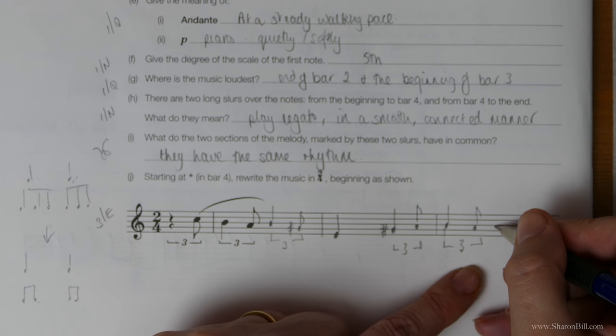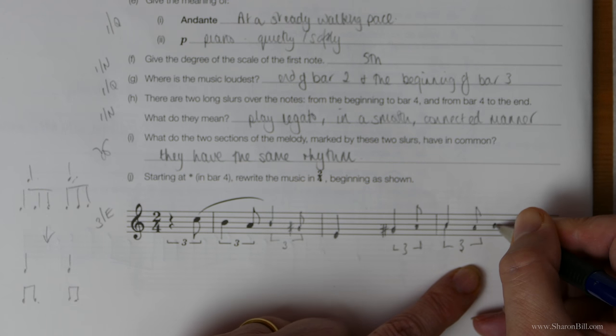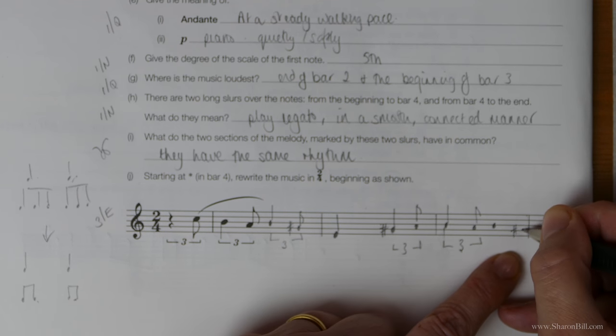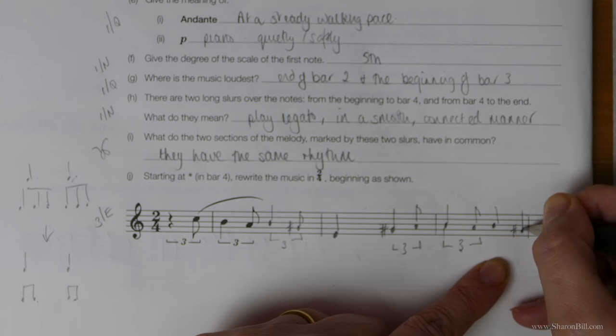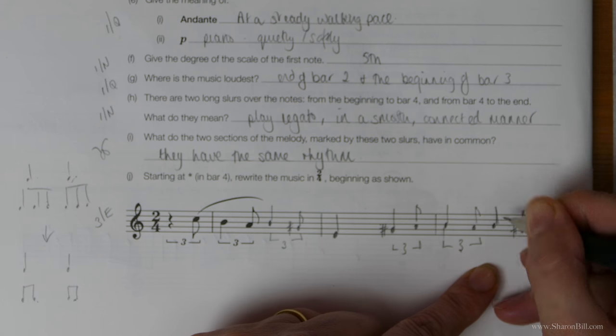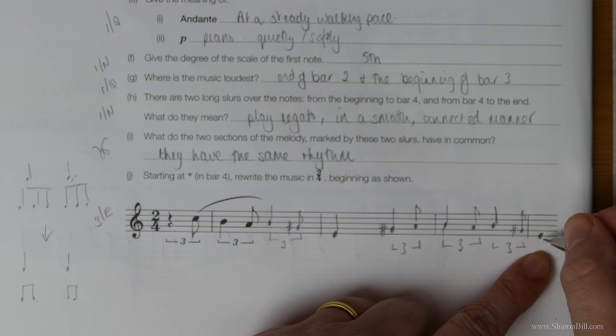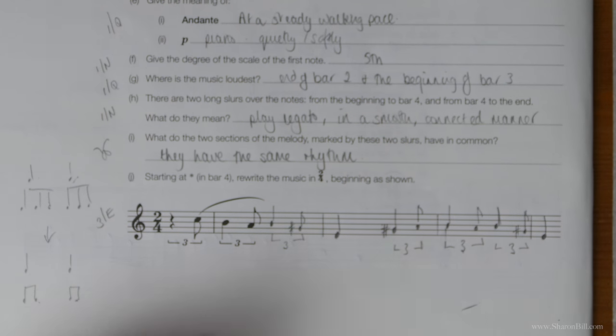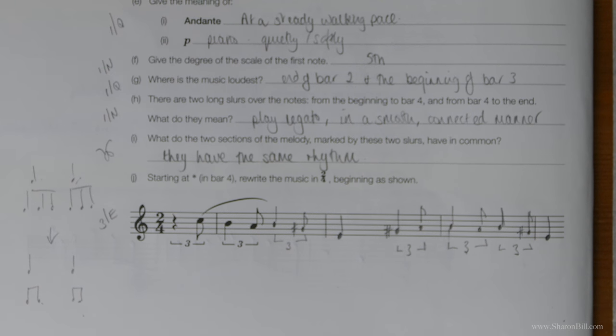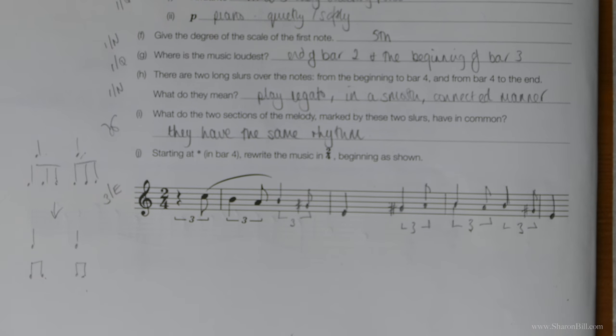So following the pattern they've given us. And then the last note, we remove the dot. And now we're in groups of two, not groups of three. There we go, then. That's completed. Not only that exercise, but this book as well. We've completed all of grade three. So well done for getting this far.